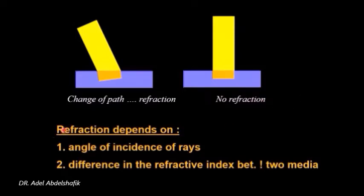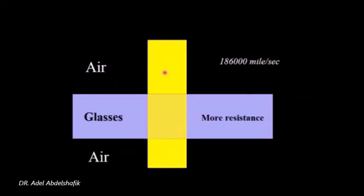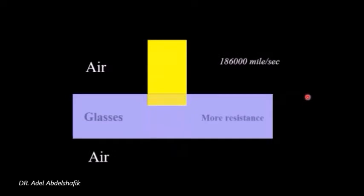The amount of refraction depends on the angle of incidence of the ray and the difference in the refractive index between the two media. To understand this, as you notice here light has a rapid speed in the air. But while passing into glass it will meet resistance and it will be slowly moving.